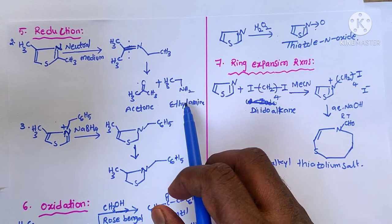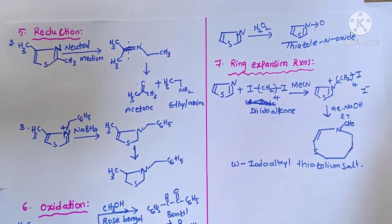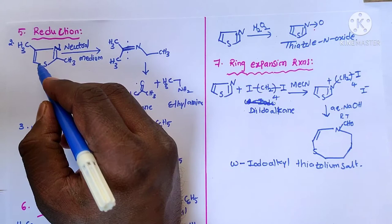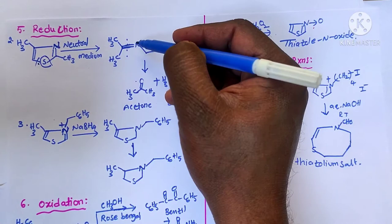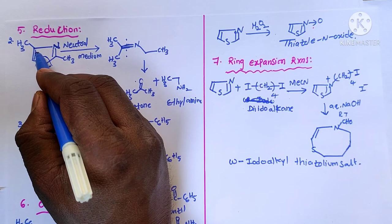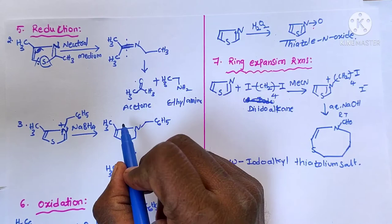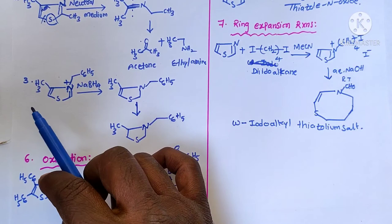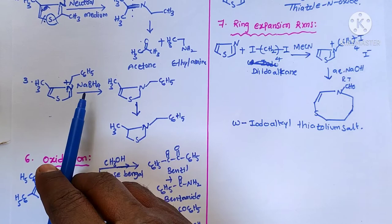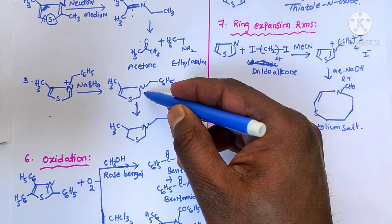When reduction is carried out in neutral medium, first ring opening takes place and finally we get acetone and ethylamine. When a substituted thiazole is subjected to reduction with sodium borohydride, we get a saturated 5-membered cyclic ring.